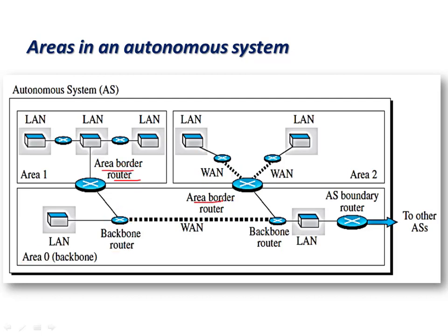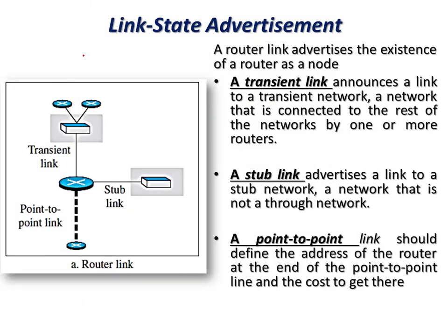The area border router connects different areas, and inter-area communication happens through the backbone router in the backbone area. The autonomous system boundary router (ASBR) is responsible for sharing and collecting information to and from other autonomous systems. To collect the link state database, routers initially gather information from adjacent nodes, then flood that information by advertising their network addresses to neighboring nodes.